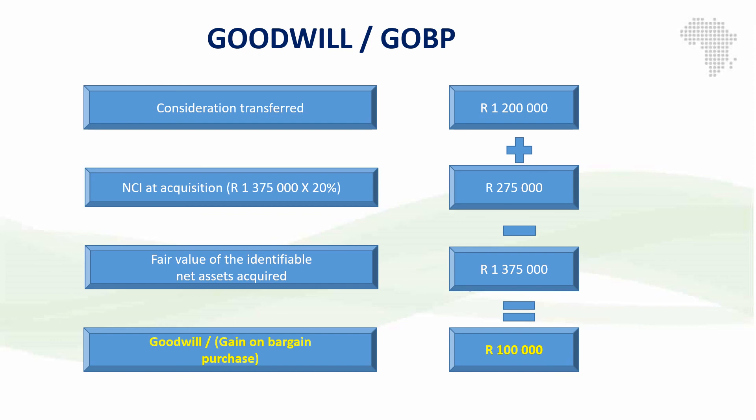We can then calculate our goodwill or gain on bargain purchase: starting with the consideration transferred of $1,200,000, then adding the NCI at their proportionate share — applying 20% to the fair value of the net identifiable assets — and then subtracting the fair value of the net identifiable assets, we arrive at a goodwill amount of $100,000.